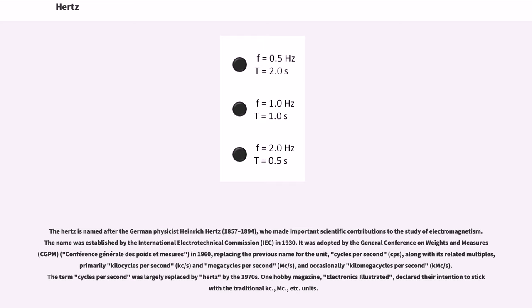Along with its related multiples, primarily kilocycles per second (kc/s) and megacycles per second (Mc/s), and occasionally kilomegacycles per second. The term cycles per second was largely replaced by hertz by the 1970s. One hobby magazine, Electronics Illustrated, declared their intention to stick with the traditional kc, Mc, etc. units.